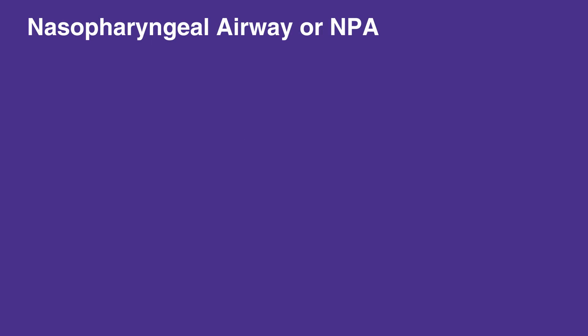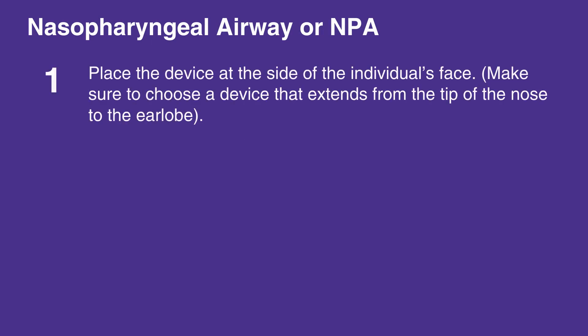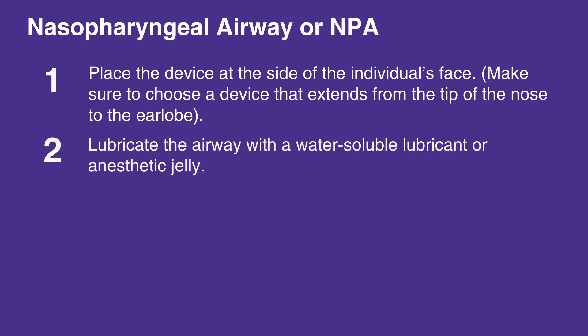To insert a nasopharyngeal airway, or NPA, place the device at the side of the individual's face. Make sure to choose a device that extends from the tip of the nose to the earlobe. Use the largest diameter device that will fit.